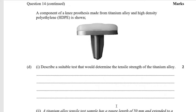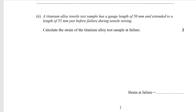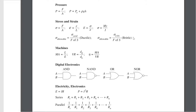In a knee prosthetic we have some titanium and some HDPE — describe a suitable test that would determine the strength of the alloy. Tensile test. Using a tensile test, calculate the strain at failure — E equals stress over strain, where E is Young's modulus. What you need to do is figure out stress, which is force over area, then from Young's modulus find the strain.